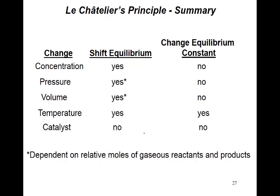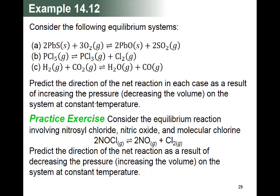That is the summary of the four conditions. Pressure and volume are related and inversely proportional to each other. Now let's solve problem 14.12. Before solving, remember this species is a pure solid — remove it; this one is also a pure solid — remove it. We have three moles of reactant and two moles of product. The question asks to predict the direction — forward or reverse — as a result of increasing the pressure.